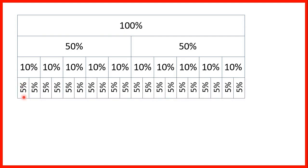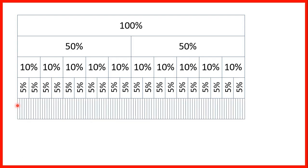For 5%, if we have 5% twenty times we have 100%. Also notice that 5% is half the size of 10%, so if we have two 5%s that's the same as having one 10%. If we show 1% bars, we need 100 1% bars to be the same as one 100% bar, because 1 times 100 is 100.